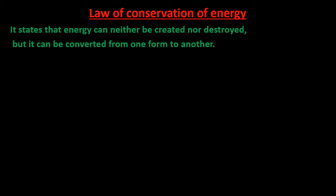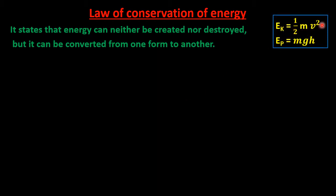Now let us discuss an activity where the total mechanical energy remains fixed. Mechanical energy means the sum of kinetic energy and potential energy. We can see that potential energy will change into kinetic energy. We have already derived the expression for kinetic energy and potential energy: kinetic energy is half mv² and potential energy is mgh.